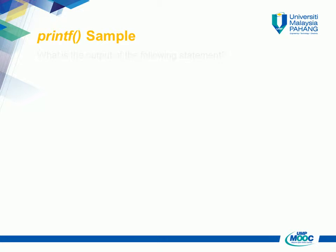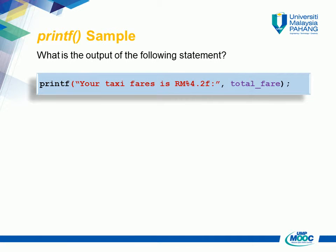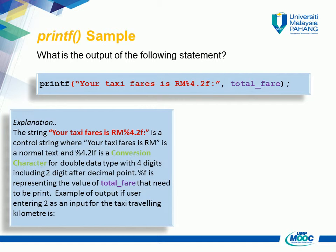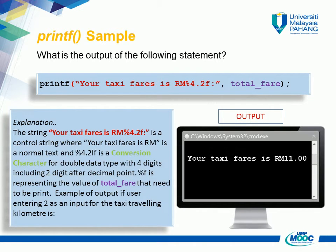Printf Sample — What is the output of the following statement? printf("YourTaxiFaresIsRm%4.2f", total_fare). Explanation: The string "YourTaxiFaresIsRm%4.2f" is a control string where "YourTaxiFaresIsRm" is normal text and %4.2f is a conversion character for double data type with 4 digits including 2 digits after the decimal point. Example output if user enters 2 km: YourTaxiFaresIsRm11.